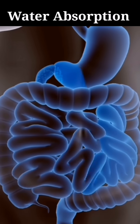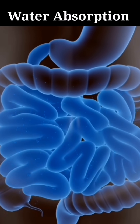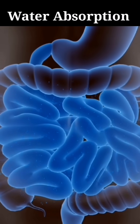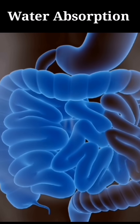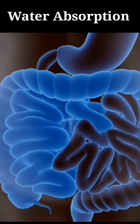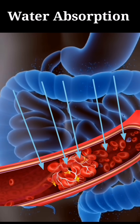From the stomach, the water is then sent to the small intestine. After passing through the small intestine, the water is transferred to the large intestine. Inside the large intestine, a significant amount of water is absorbed into our bloodstream.